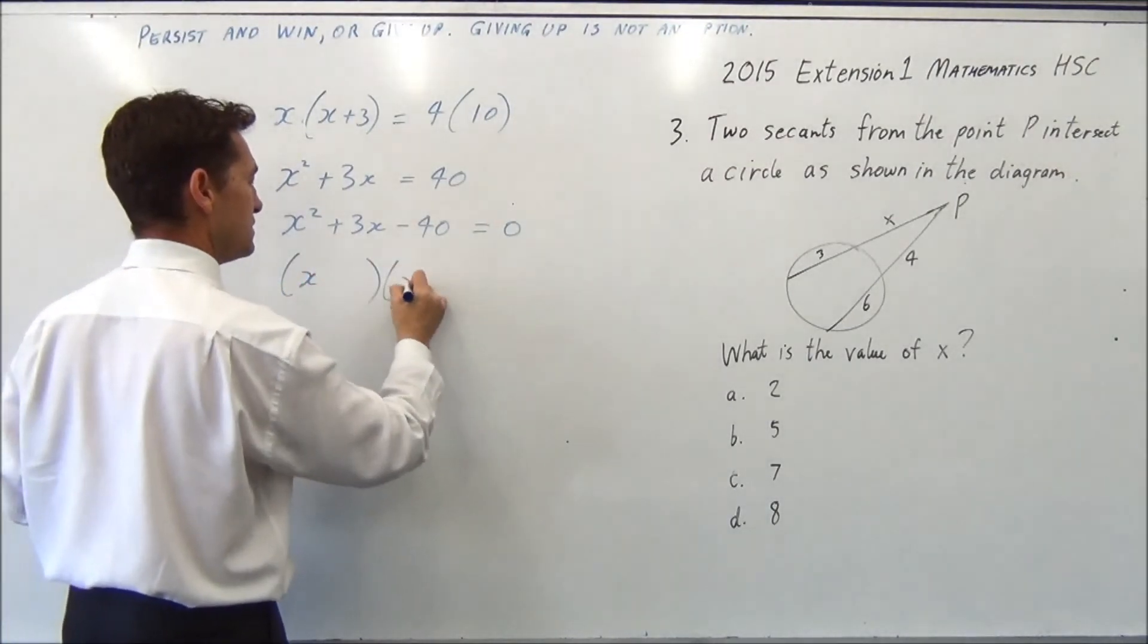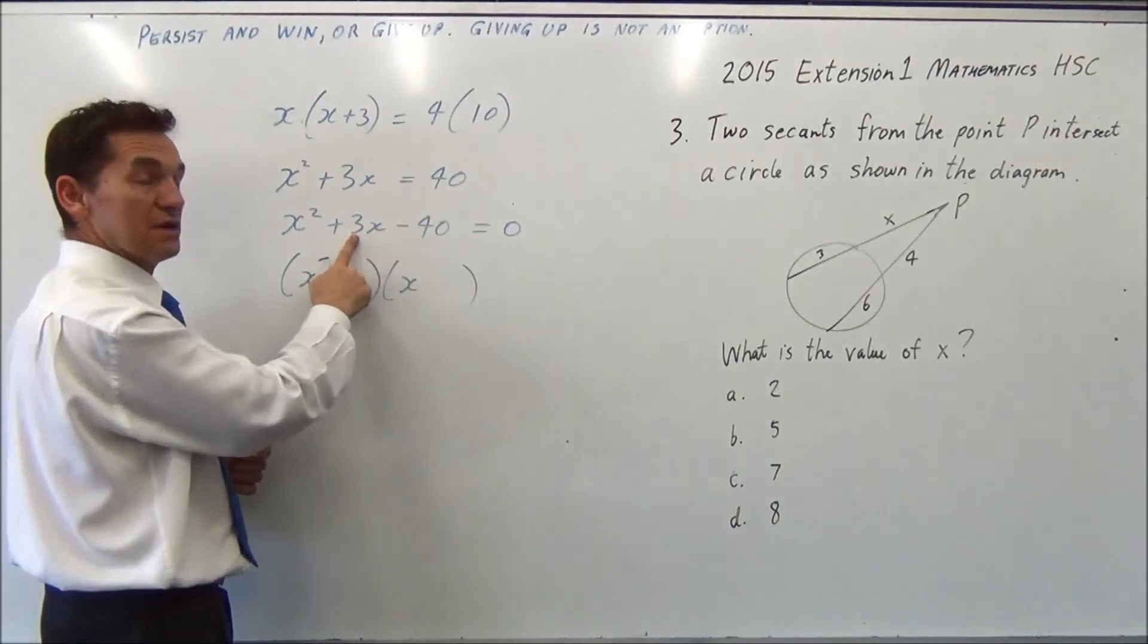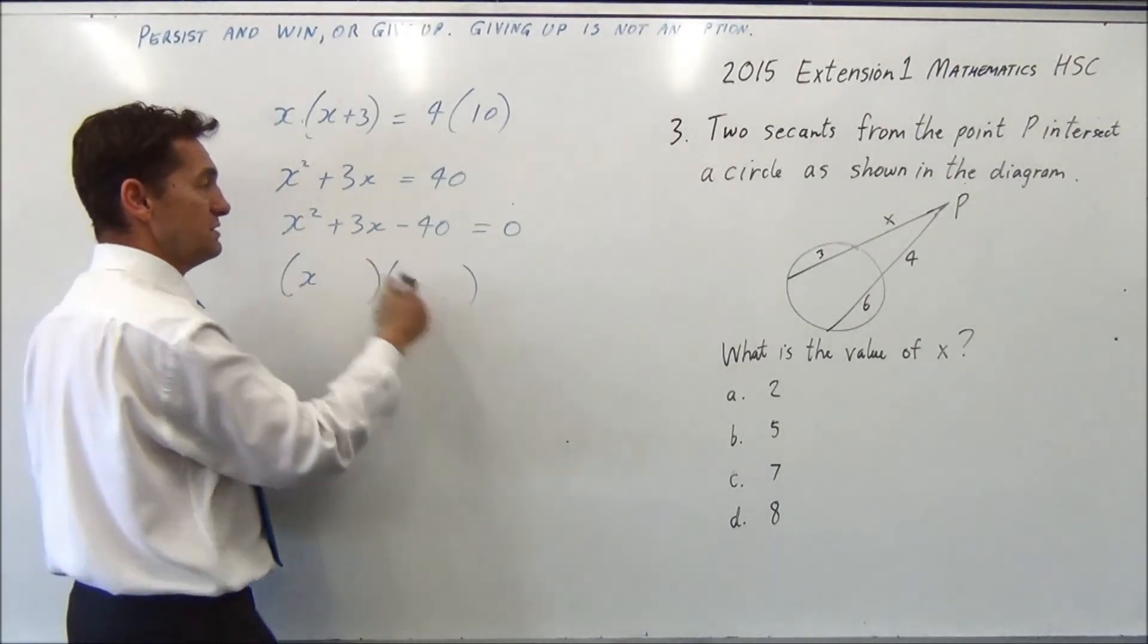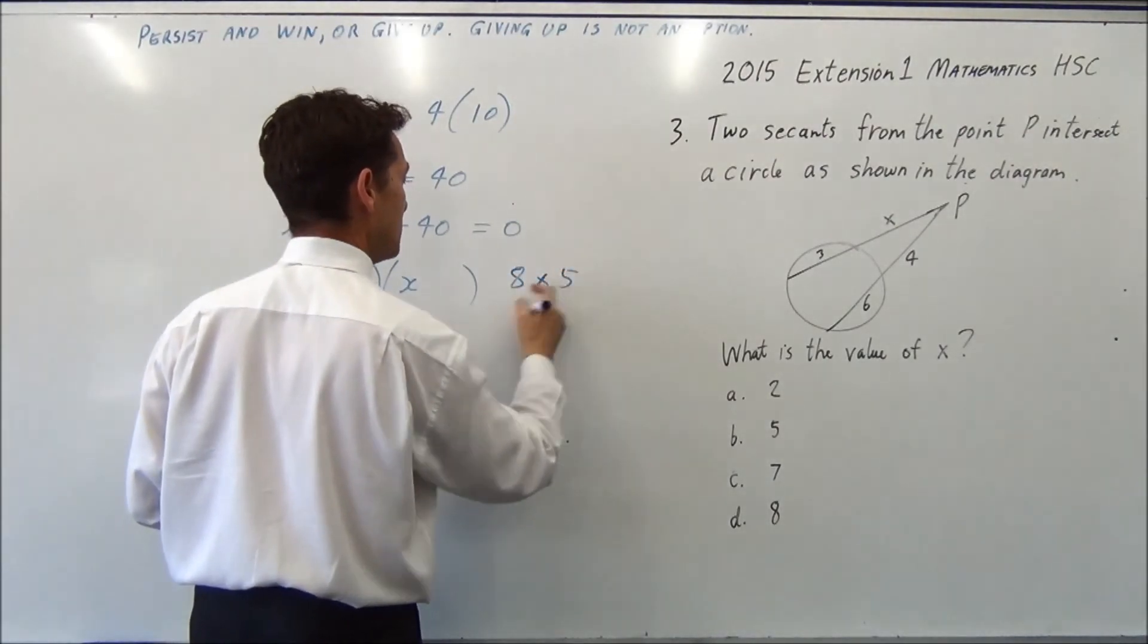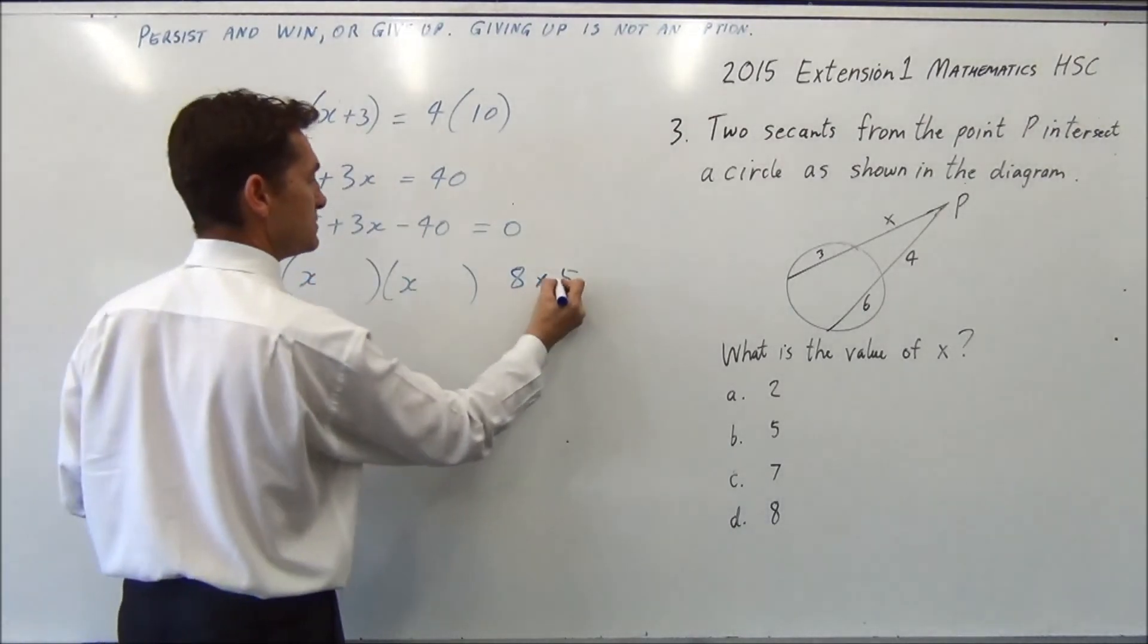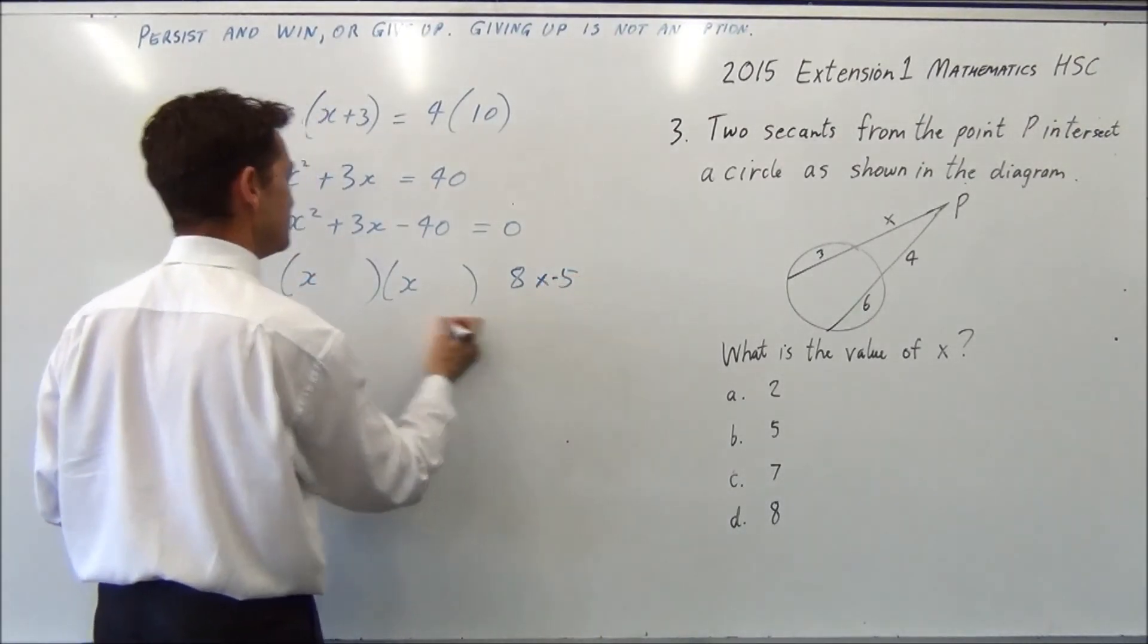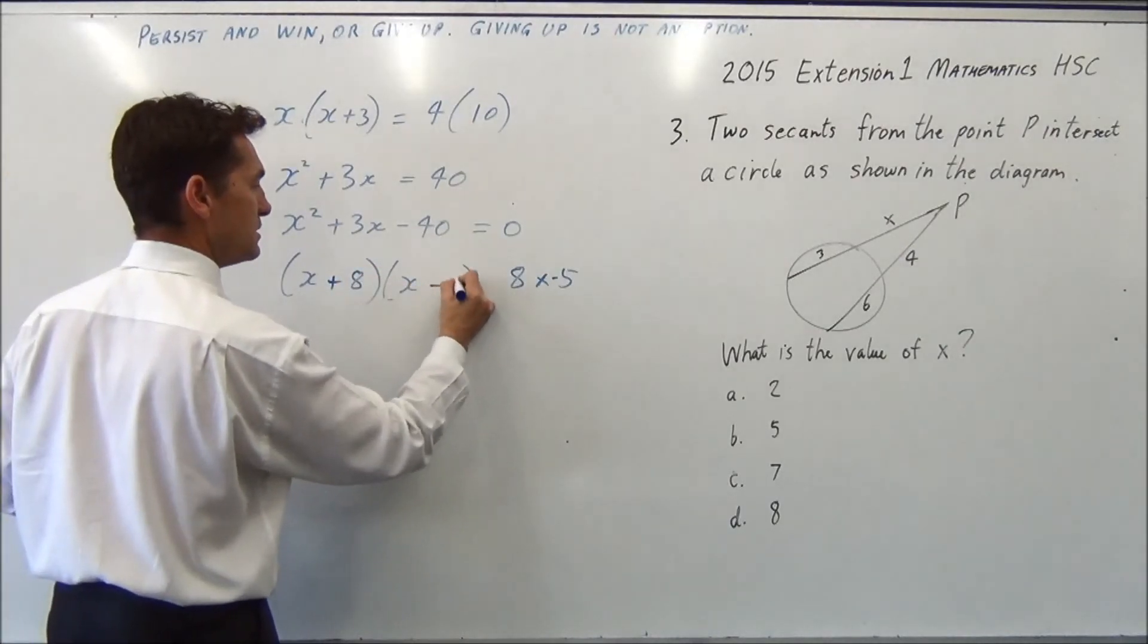So very simple factorisation, so you've got x, x, two numbers that multiply to 40 and add to 3. So we're going to go 8 times 5. One of them has to be negative, and this has to be positive. So this one has to be negative, so we're going to go x plus 8, x minus 5.